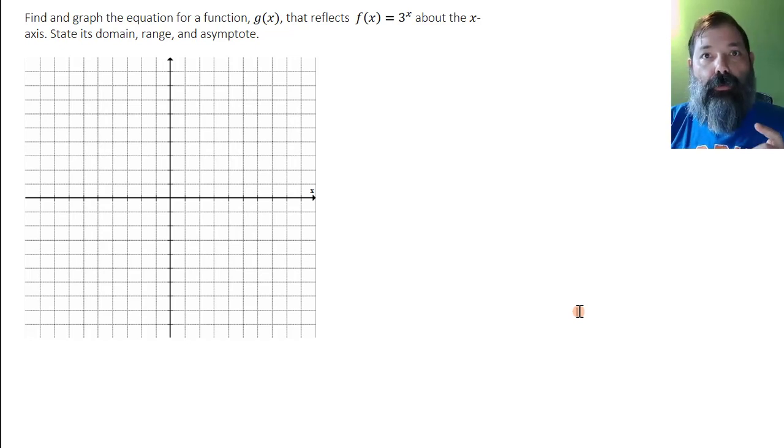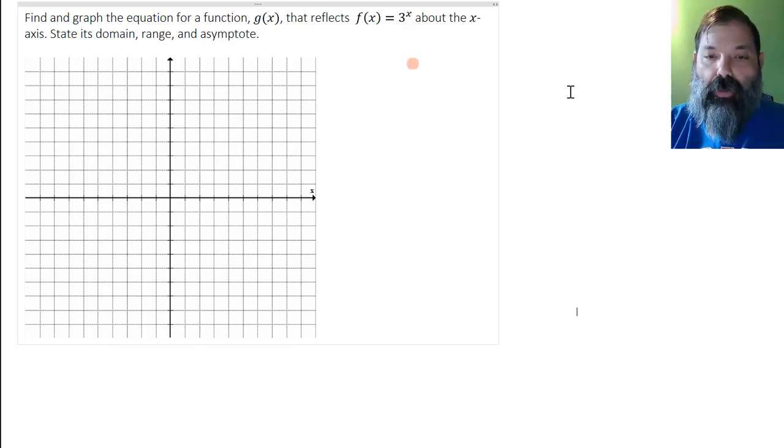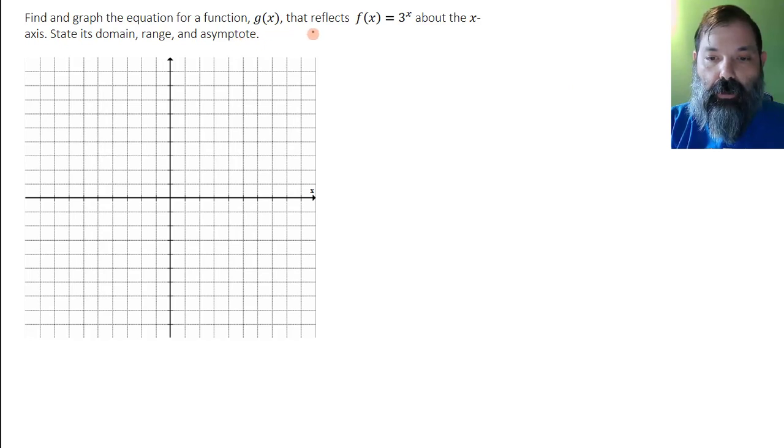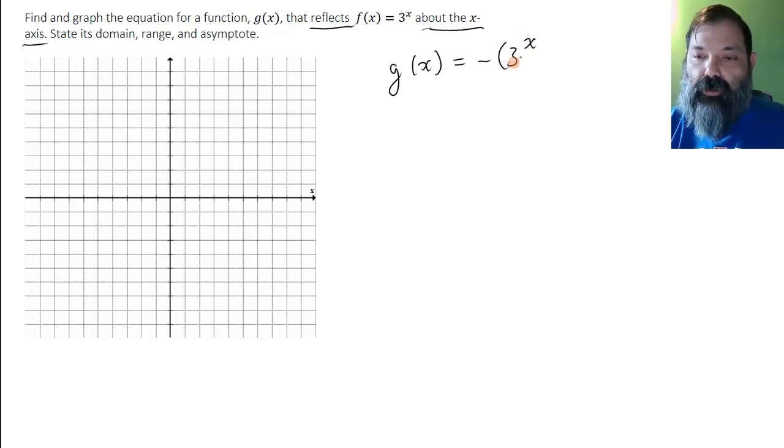Okay, so if we remember from transformations of functions we learned earlier, to reflect a function about the x-axis, you multiply it by negative 1. So if f(x) = 3^x, then to reflect it about the x-axis, g(x) would be the opposite of 3^x. Now sometimes we'll put parentheses around the 3 just to be safe, but that's the function.